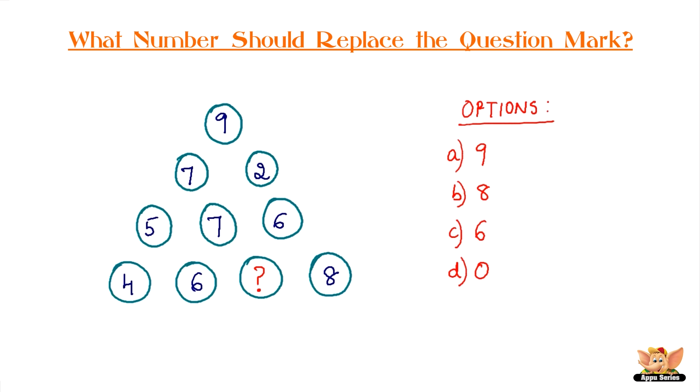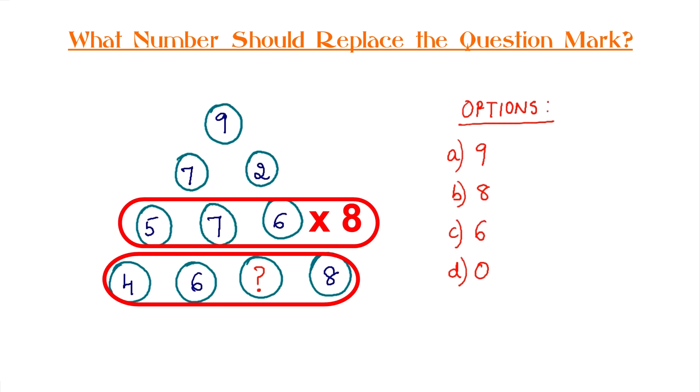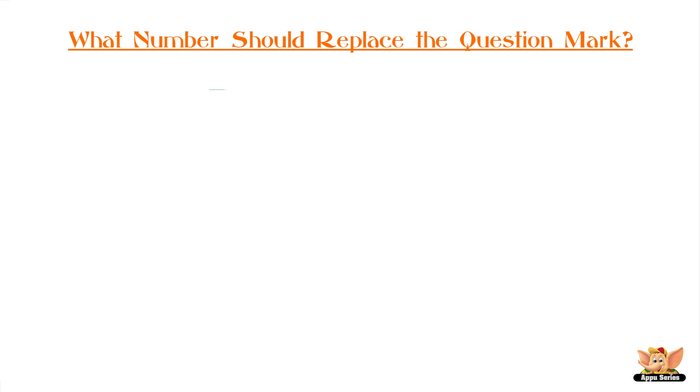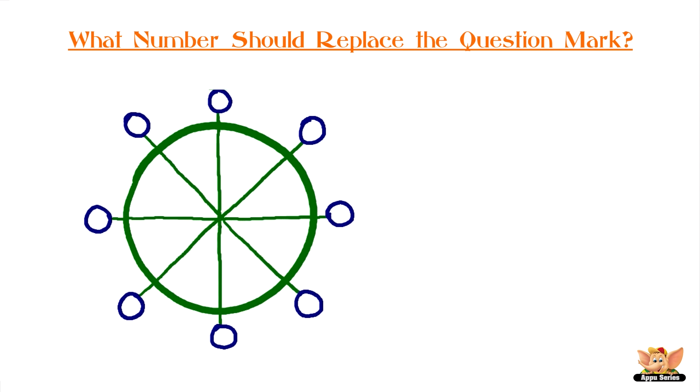What number should replace the question mark? Complete the wheel. The circle is divided into eight parts. Each corner is assigned with a number: 13, 12, 8, 5, 11, 14, question mark. Options are A: 72, B: 17, C: 15, D: 23. The clock is ticking.